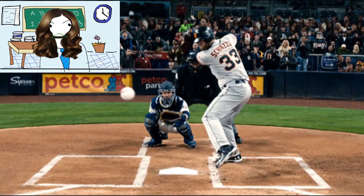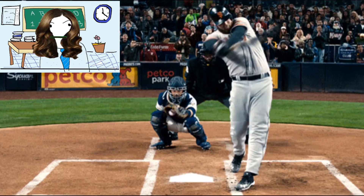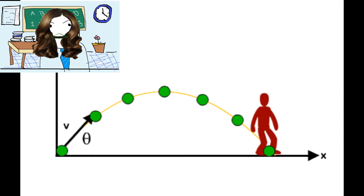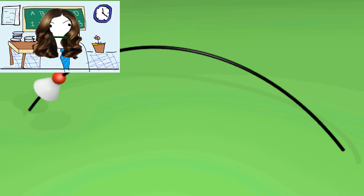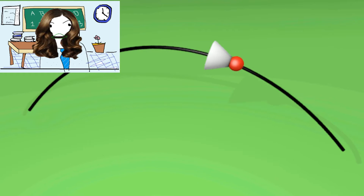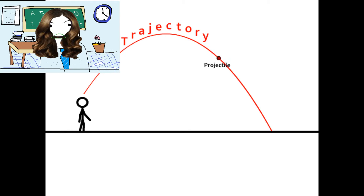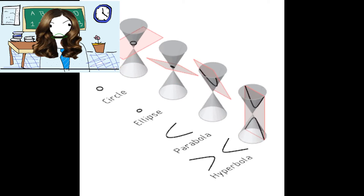We can calculate this trajectory if we know two things: a fixed point — the focus, your hand or the point where the ball makes contact with a bat — and a fixed line, the directrix of the distance the ball travels. Any point on the trajectory is an equal distance from the focus and the directrix.